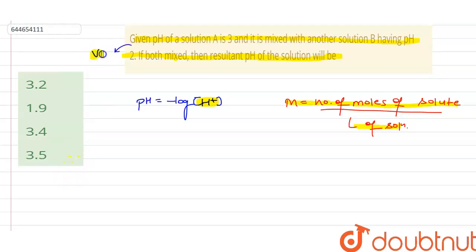So V will be the volume of each of the solution, and n1 will be the number of moles of H+ present for the pH equal to 3, and n2 will be the number of moles of H+ for the pH which is equal to 2.